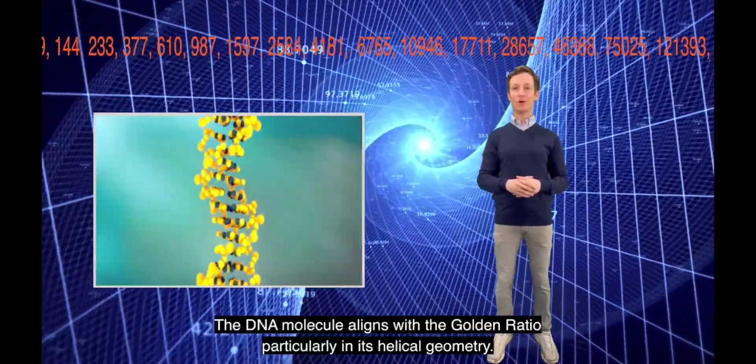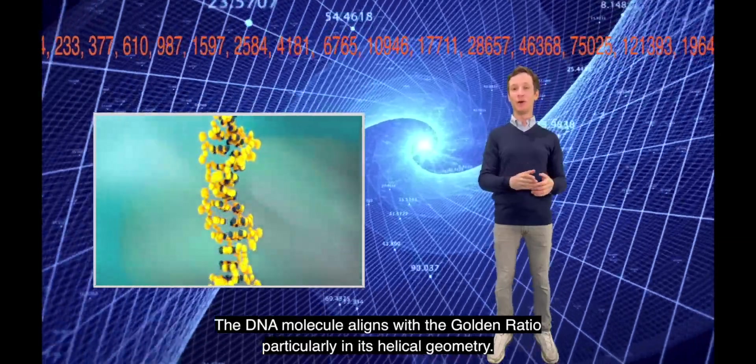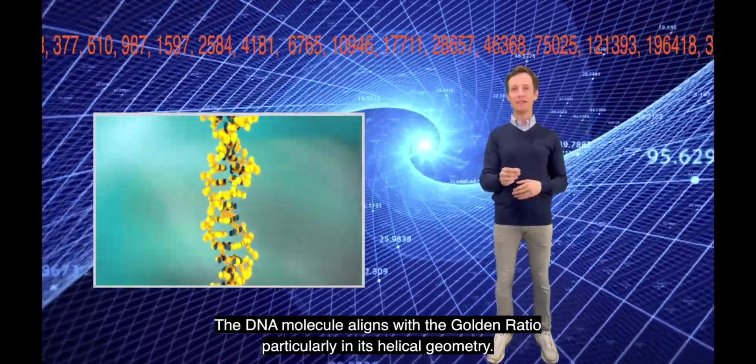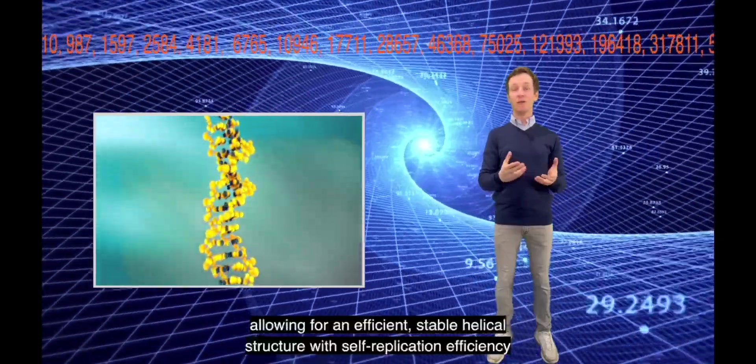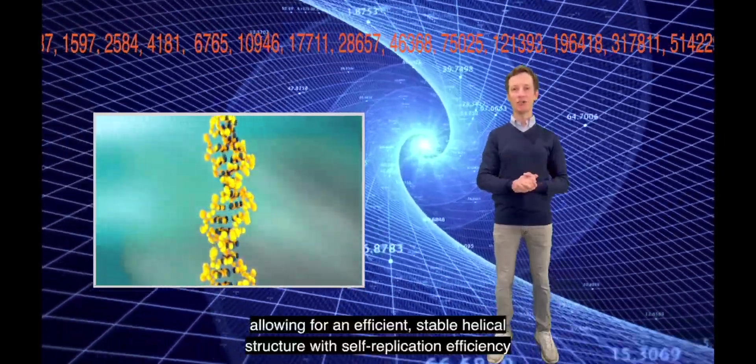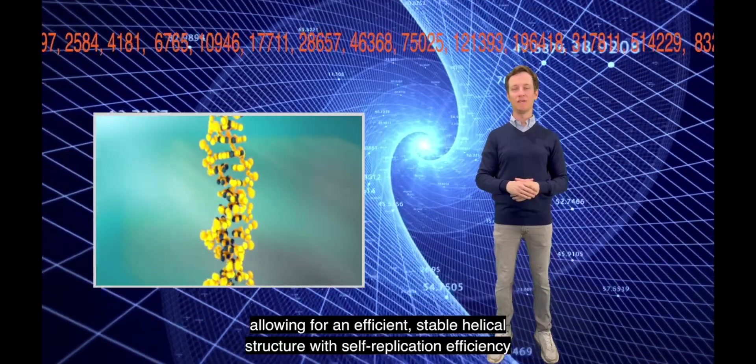The DNA molecule aligns with the golden ratio, particularly in its helical geometry, allowing for an efficient, stable helical structure with self-replication efficiency.